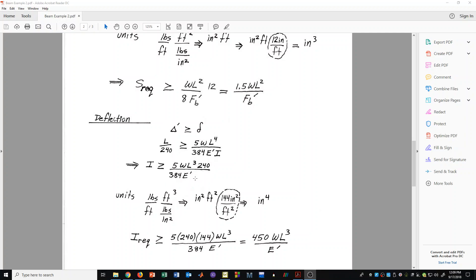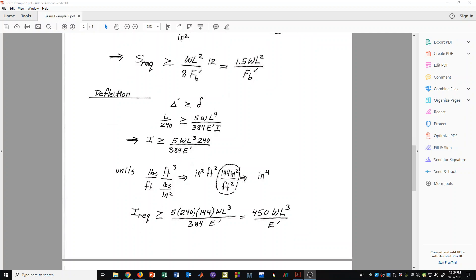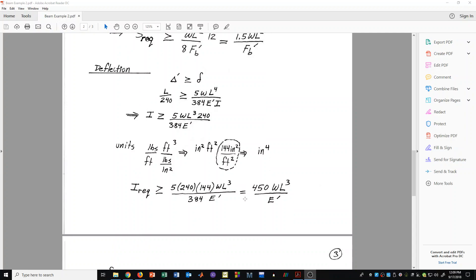Again, we need to do a units check for this right-hand side. We have pounds per foot for W, feet cubed for L cubed, and pounds per inch squared for E prime. Simplifying that, we get units of inches squared times feet squared. We can see that we need to convert this by adding this factor of 144 inches squared per foot squared, and the resulting output would then be inches to the fourth, which is what we want for the moment of inertia. So we must take 144 and multiply it times this formula. Simplifying all of these numbers into a single number, we get 450 WL cubed over E prime.